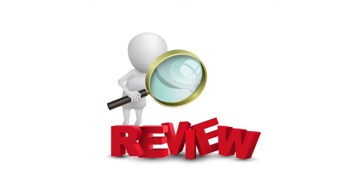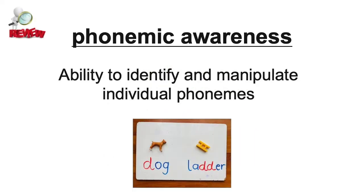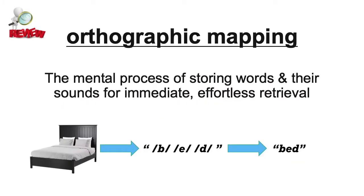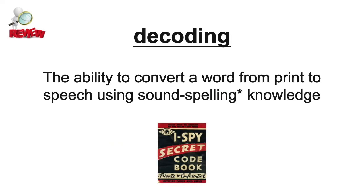Let's start with a review of that key background knowledge. Phonemic awareness is the ability to identify and manipulate individual phonemes. Phonemic awareness is one of the levels of phonological awareness — remember that these two terms are not interchangeable. Orthographic mapping is the mental process of storing words and their sounds for immediate and effortless retrieval. Decoding is the ability to convert a word from print to speech using sound-spelling knowledge. Remember that sound-spelling knowledge is the same as phoneme-grapheme correspondences or sound-spelling relationships.